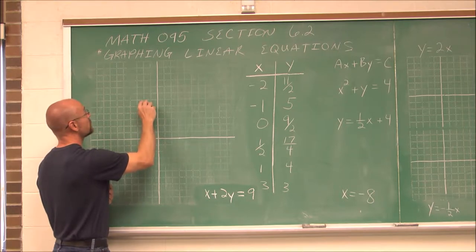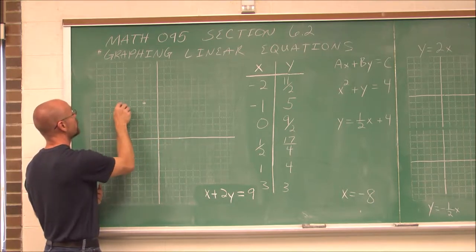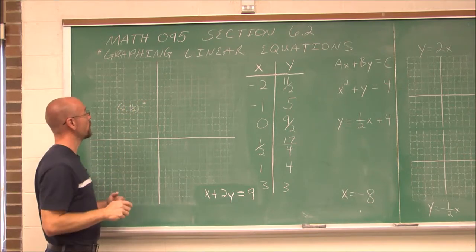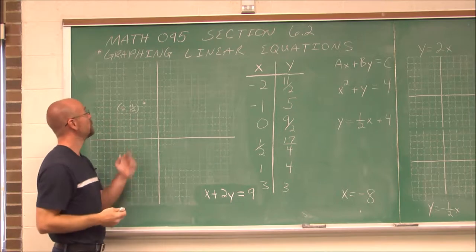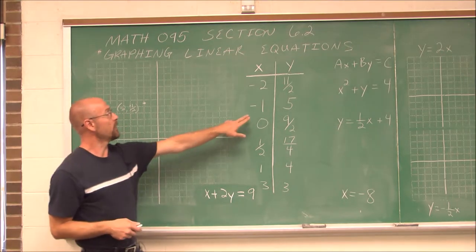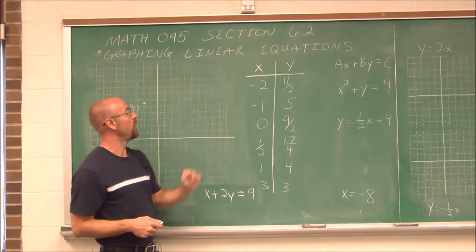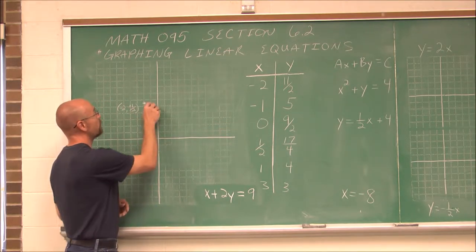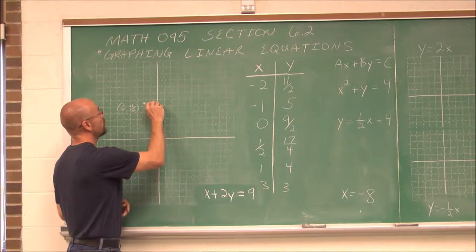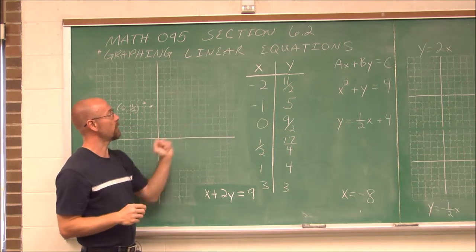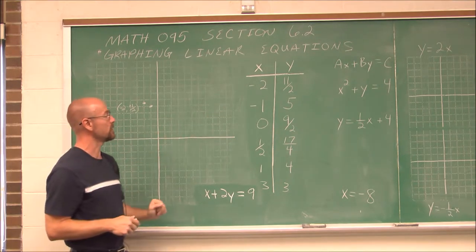So this is the ordered pair. And I'll label it right here — negative 2, 11 halves. So I'm labeling my point. If you're ever asked to label a point, make sure you write it as an ordered pair: x, y. If we graph the next point, negative 1 and 5 — when x is negative 1, I move 1 to the left and go up 5 in the y. I'm not going to label that ordered pair, otherwise my graphs are going to get a little crowded.